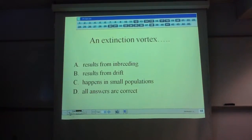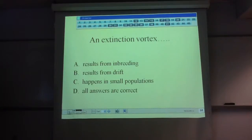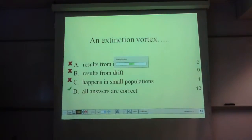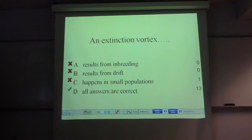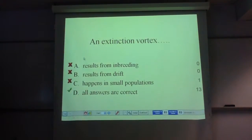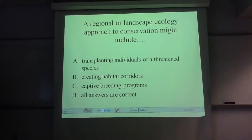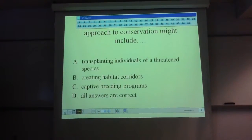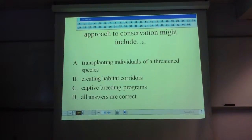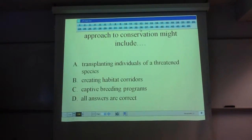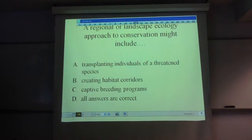An extinction vortex happens in a small population: because the population is small you end up with a lot of inbreeding and drift, and that makes the population even smaller. A regional or landscape ecology approach to conservation might involve transplanting individuals of a threatened species, creating habitat corridors, or captive breeding programs. A landscape ecology approach specifically would be something like creating habitat corridors.